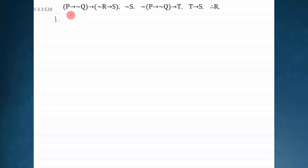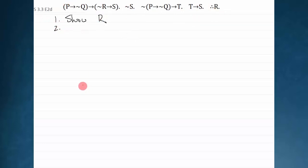All derivations start with a show line where I'm trying to show the conclusion, and I want to show that from the truth of the premises, the conclusion follows. The first abbreviation I'm going to make use of is I'm not ever going to bother relisting my premises in my proof. As you saw in the previous example, I will refer to the premise directly in my justification — and now I'm going to always do that.